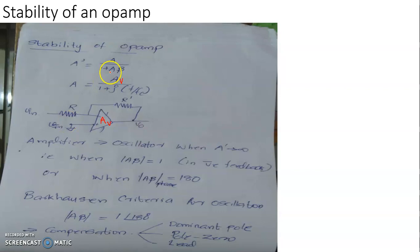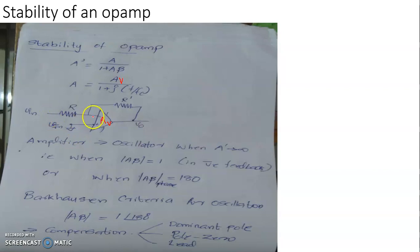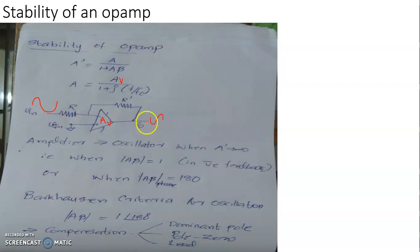This is a basic inverting amplifier configuration. The non-inverting terminal is grounded. To the inverting terminal we have an input signal applied through the input resistance, and R prime is the feedback resistance. The output voltage is shifted 180 degrees with respect to the input since it is an inverting amplifier configuration. A part of this output signal appearing across R is given back to the input as feedback.